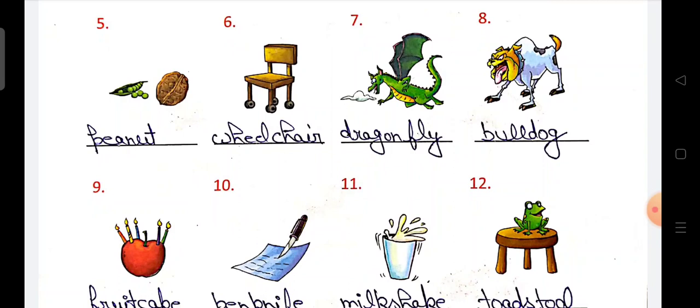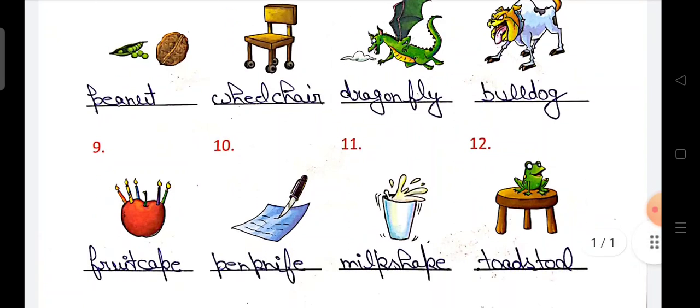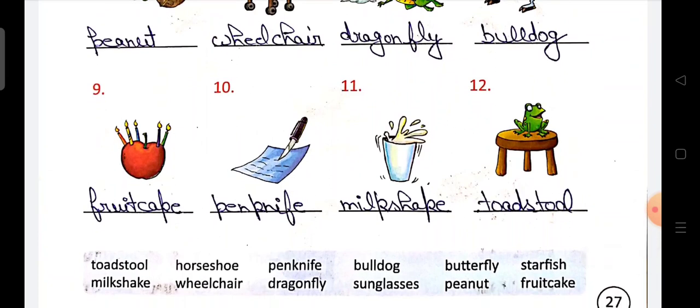7 is dragonfly, number 8 bulldog, number 9 fruitcake, number 10 penknife, 11 milkshake, and number 12 is toadstool.